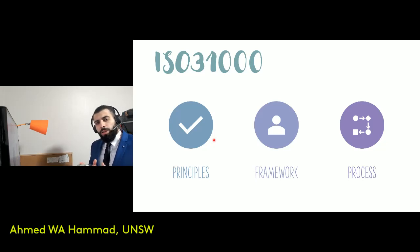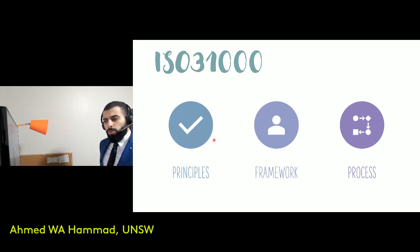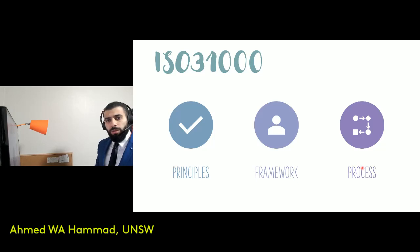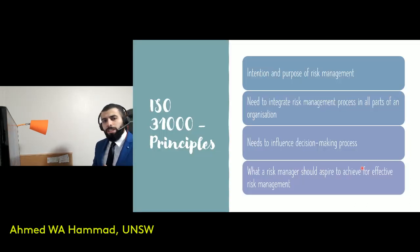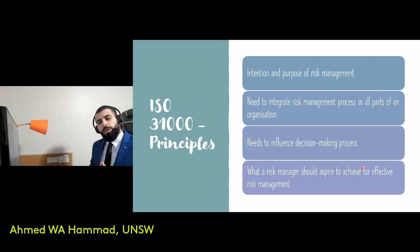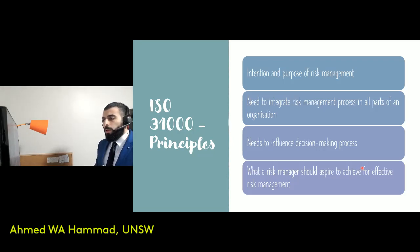There are three concepts that I want to focus on in this video from the ISO 31000 standard: the principles, the framework, and the process involved for risk management in an organization. The principles can be thought of as an indication of the intention and purpose of risk management for the organization, viewed from the perspective of a risk manager — what that risk manager is aspiring to achieve for effective risk management. There is an emphasis on the need to integrate the risk management process in all decision-making aspects and activities of the organization.